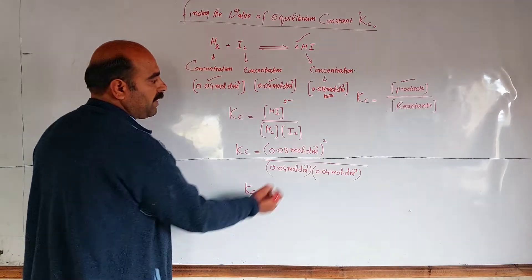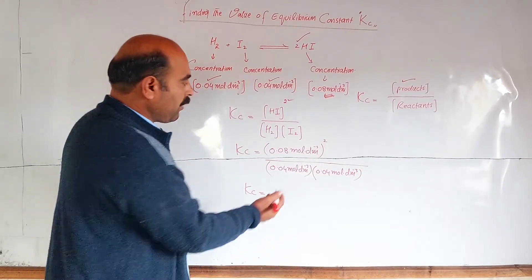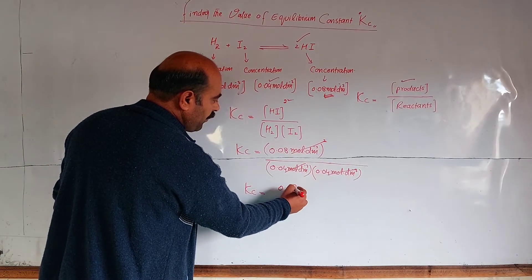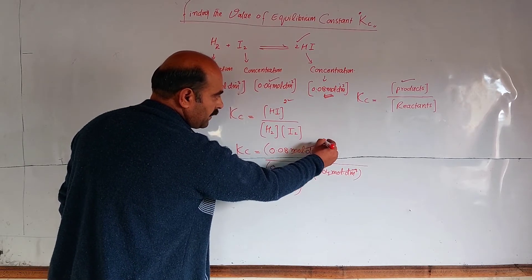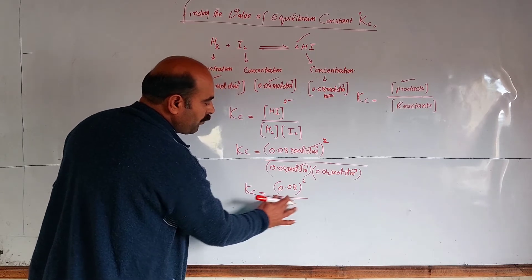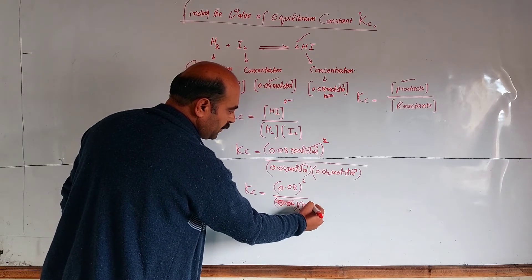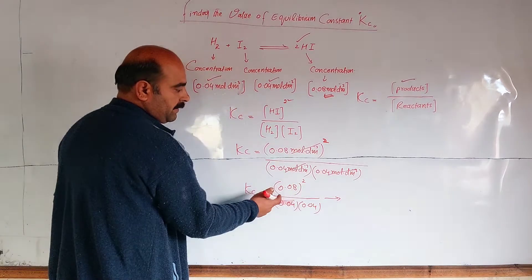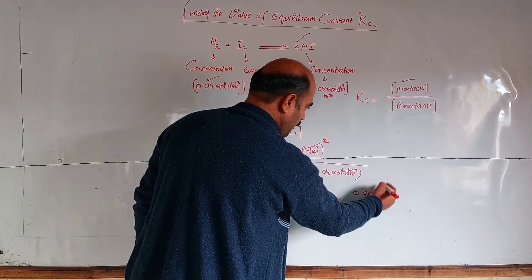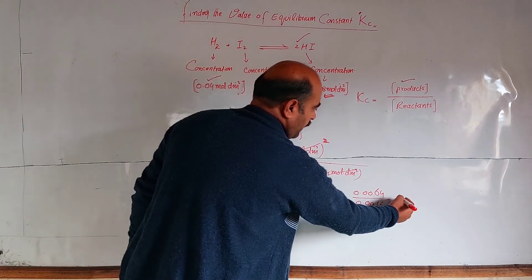Kc equals mole per decimeter cubed squared. The units appear twice, so the units cancel out. Kc equals 0.08 whole squared divided by 0.04 multiplied by 0.04. 0.08 squared gives 0.0064 divided by 0.0016, which equals 4.